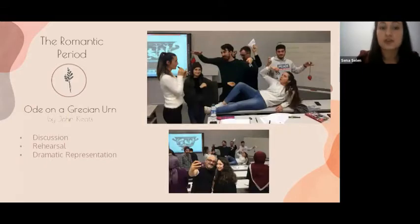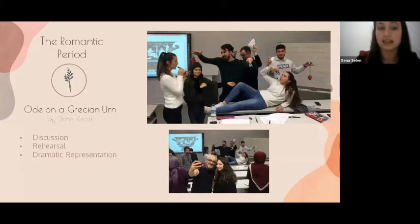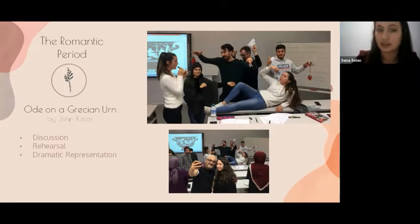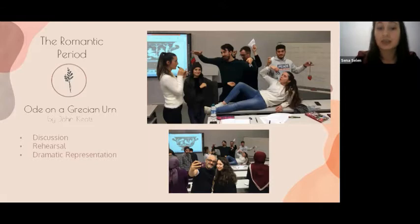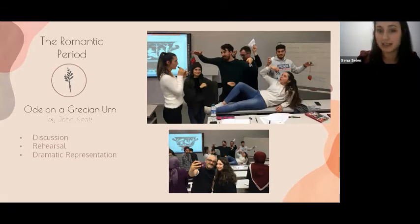With John Keats' 'Ode on a Grecian Urn,' we learned that we can stop time only through art. We did a dramatic reenactment of the iconic paintings on the Grecian Urn. The whole class turned into a museum as we acted, and we reinforced the history-art difference by animating it. We realized that when art is combined with our imagination, it becomes more beautiful than reality itself.